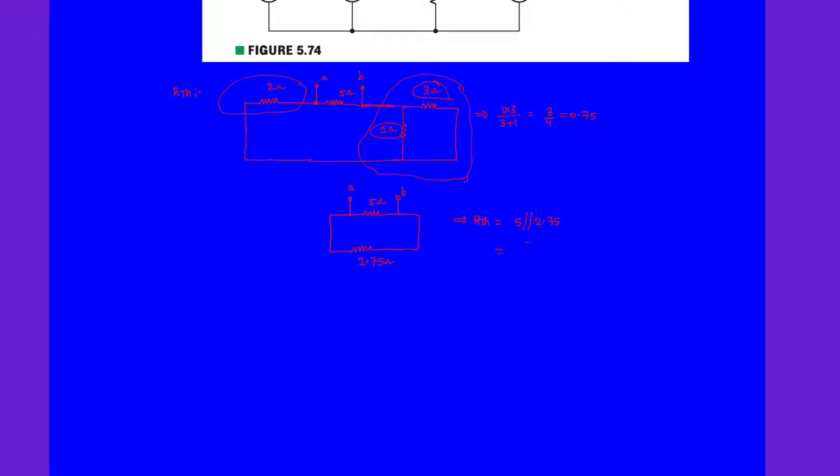So clearly it is 5 multiplied with 2.75 over 5 plus 2.75. Let us see how much this value can be.